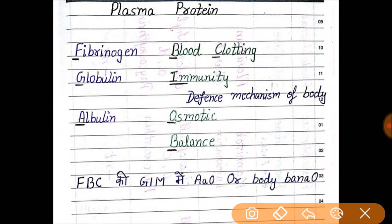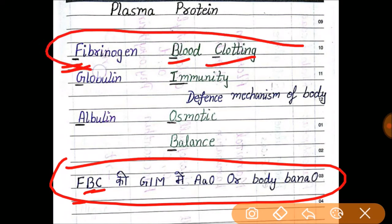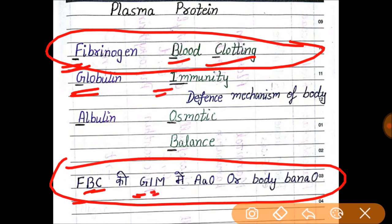Our trick is 'FBC key gym.' F is for fibrinogen, B is for blood, and C is for clotting — so FBC gives you that. Then G is for globulin, and I is for immunity, which is simply a defense mechanism that you can easily remember, so there is no need to focus much on that.